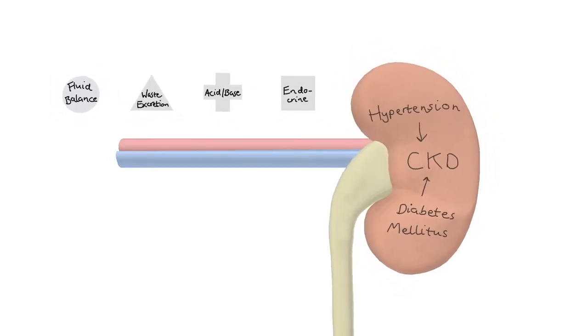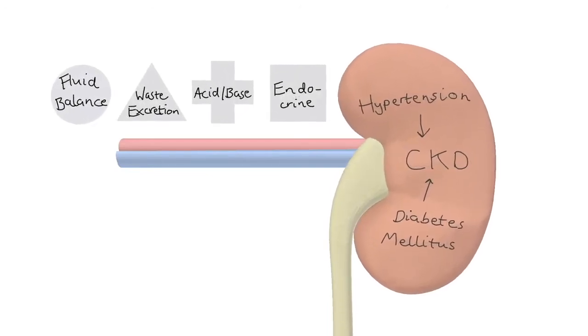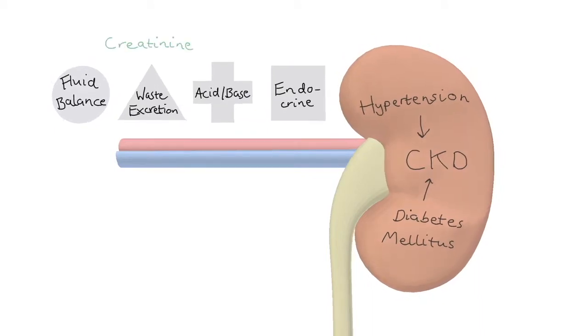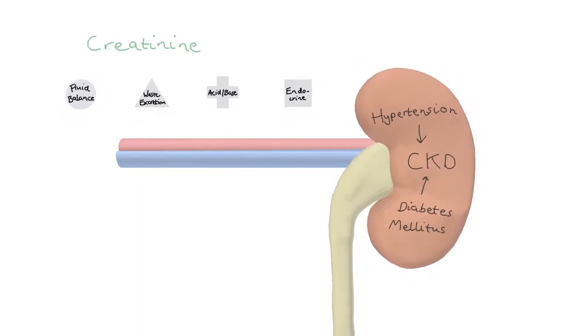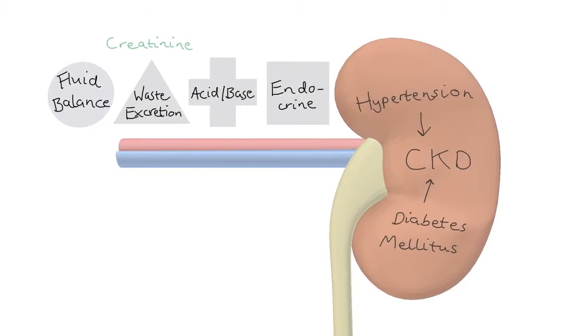To diagnose CKD, we want to get an idea of how the kidneys' million glomeruli are faring. To do this, we measure serum creatinine, which is a waste product the kidneys are supposed to get rid of, and put it into a calculator with the patient's height and gender.